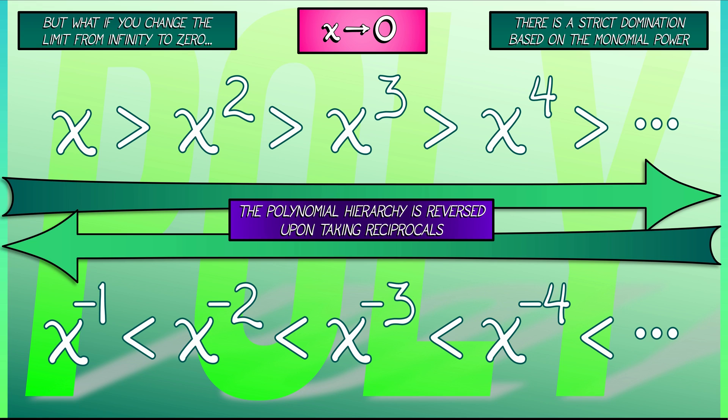On the other hand, the reciprocals are blowing up to infinity, and there is a reverse domination there. 1 over x is less than 1 over x squared, et cetera.